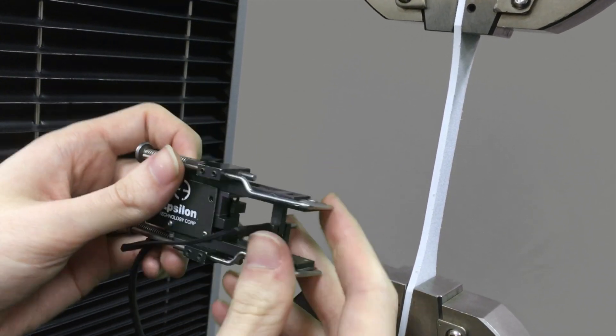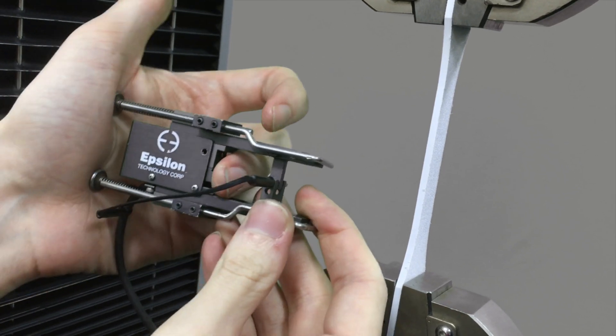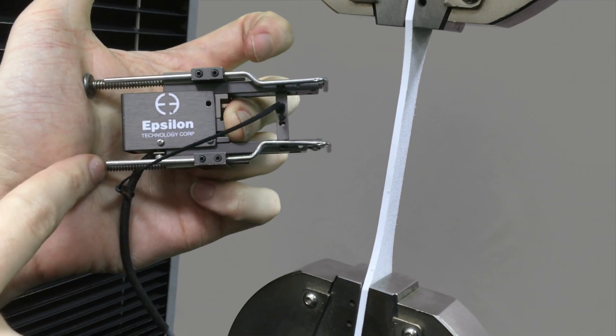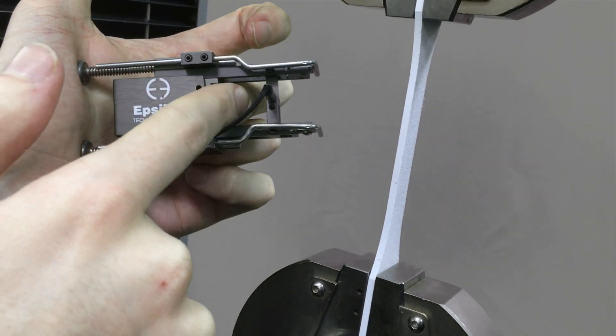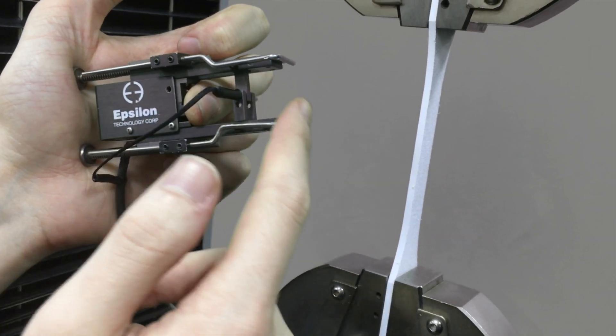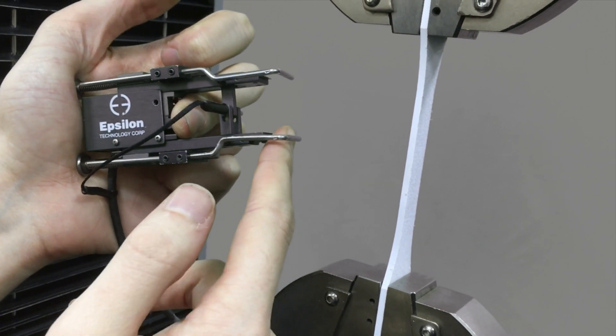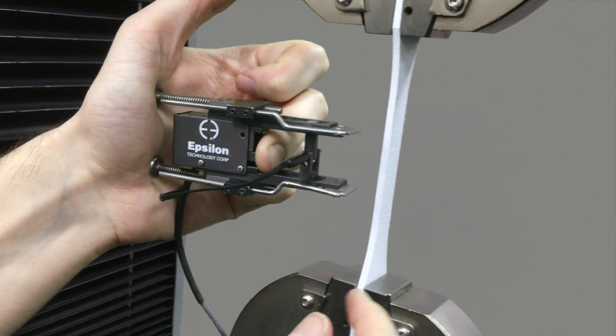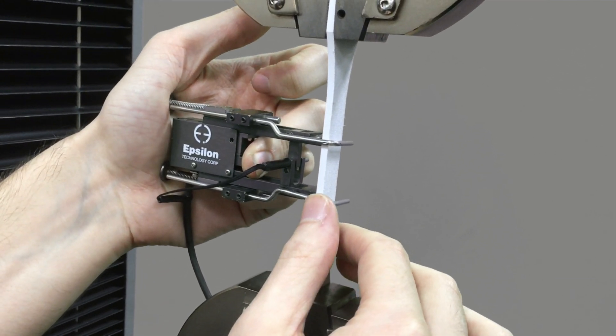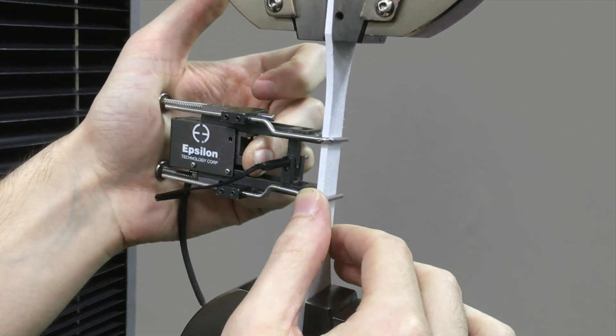In order to insert the extensometer on your sample, in this case there's these two pins here. What you do is put your middle finger here and simply push these two pins, and it allows these metal clamps to open the teeth. So what you're going to do is push those pins in, set it on your sample, and let go.